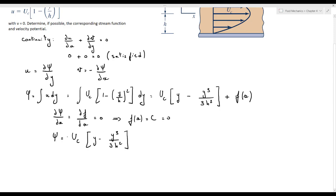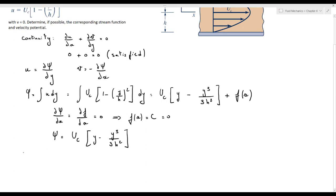Then the stream function psi is equal to uc into y minus y cubed over 3h squared.